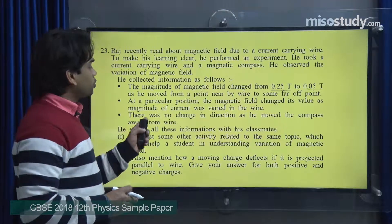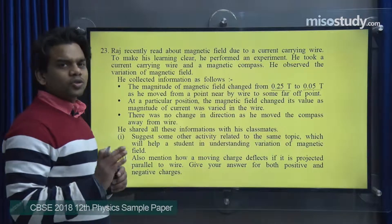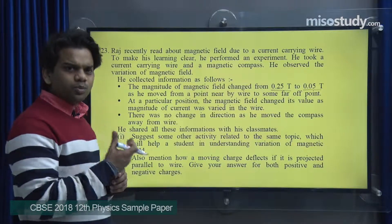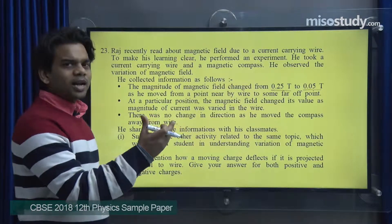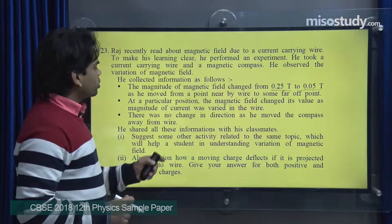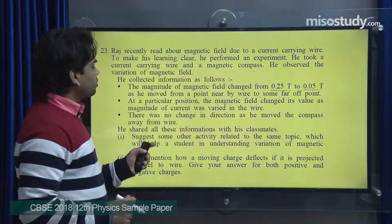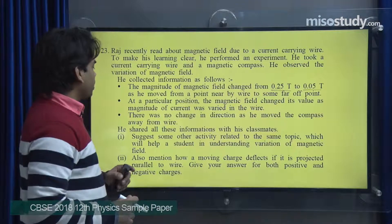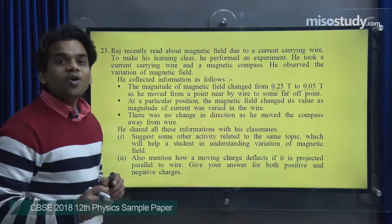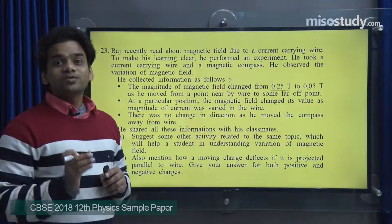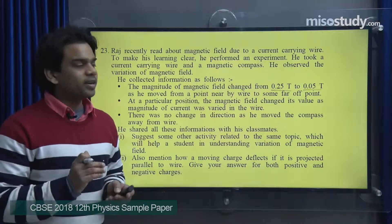His third observation was that there was no change in the direction of the magnetic field as he moved the compass away from the wire. He shared all this information with his classmates. The first part of the question asks: suggest some other activity related to the same topic which will help a student in understanding the variation of magnetic field due to a current-carrying wire.